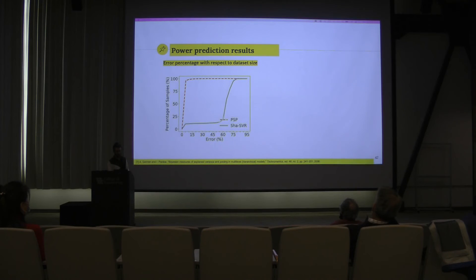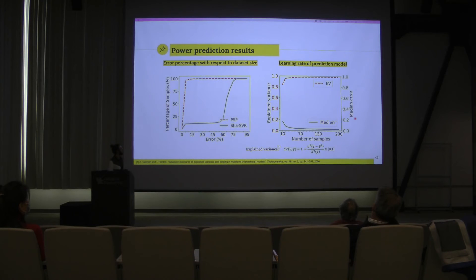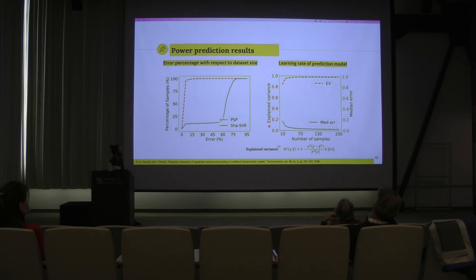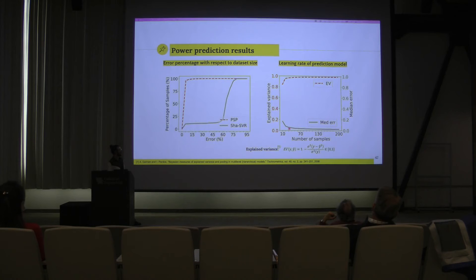We also show the performance of our learning rate, evaluated through median error and explained variance — a metric between 0 and 1 where higher means better prediction. We show that as soon as we have 20 to 30 samples, our prediction converges to a very small error.